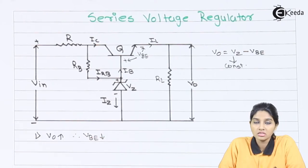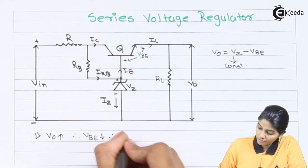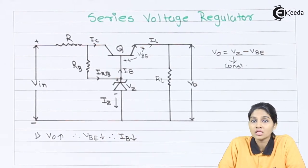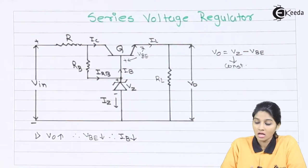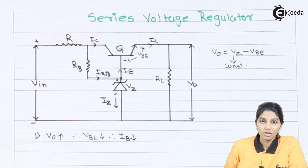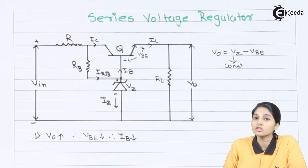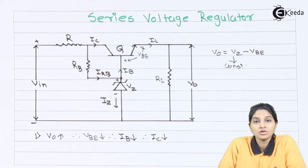As Vbe decreases, the base current Ib also decreases. We know that the transistor is a current-controlled device, so the input current controls the output current, that is, the collector current. A decrement in the value of Ib also causes a decrement in the value of collector current Ic. Therefore the collector current Ic is also reduced.